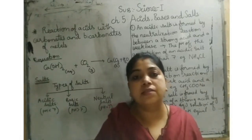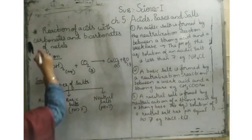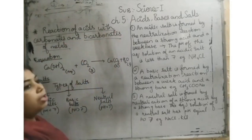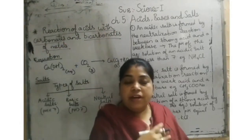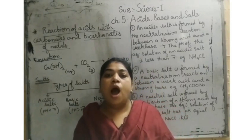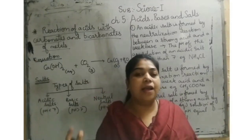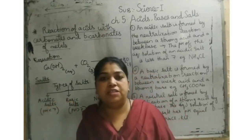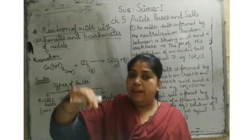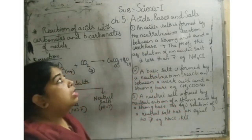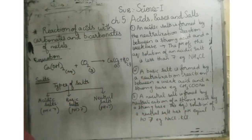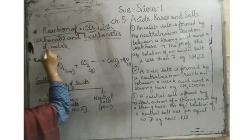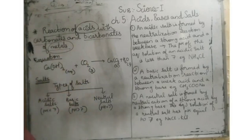Our first topic today is the reaction of acids with the carbonates and bicarbonates of metals. In our next chapter, we are going to study how carbonates and bicarbonates are formed, and one small reaction from here is repeated there as well. So here we are going to study the reaction of acids with carbonate and bicarbonate metals.